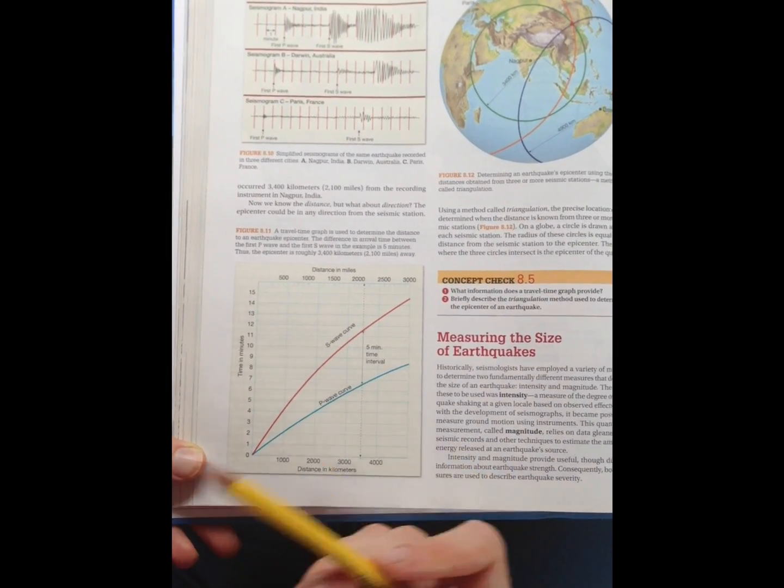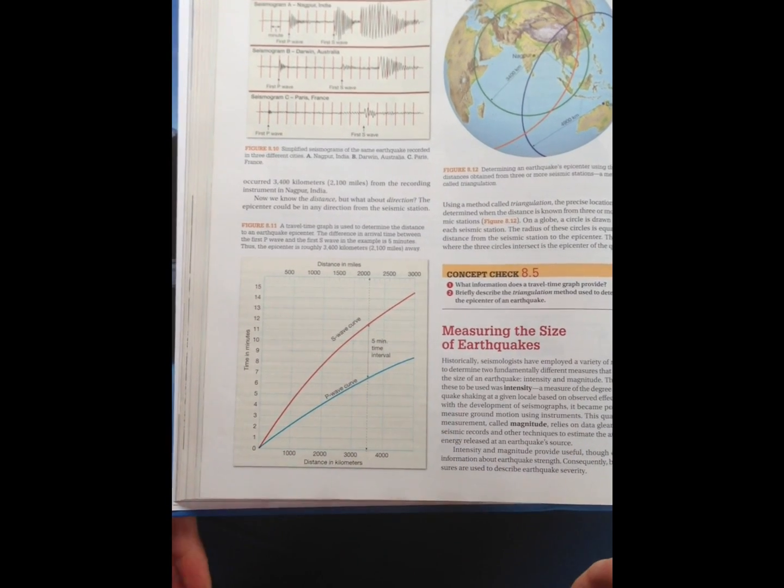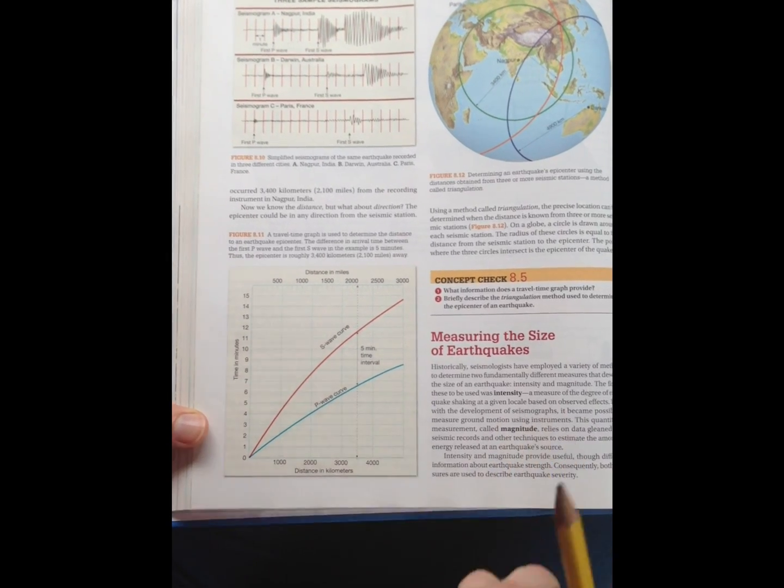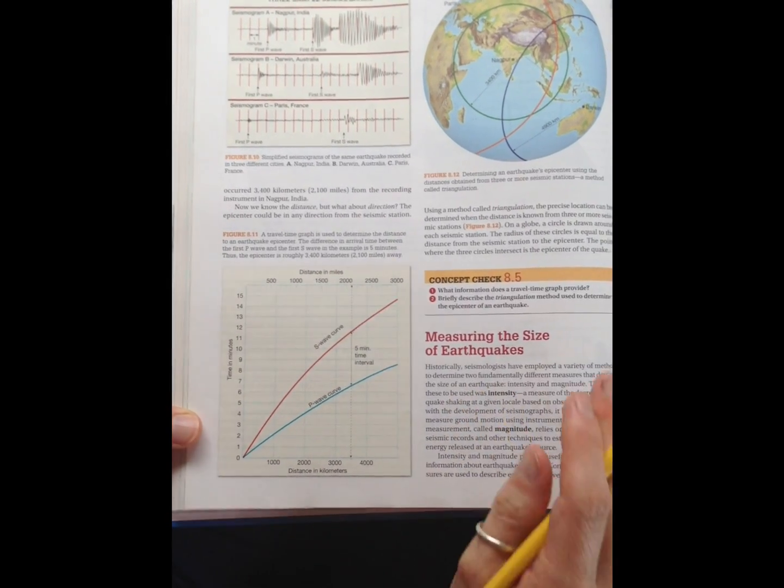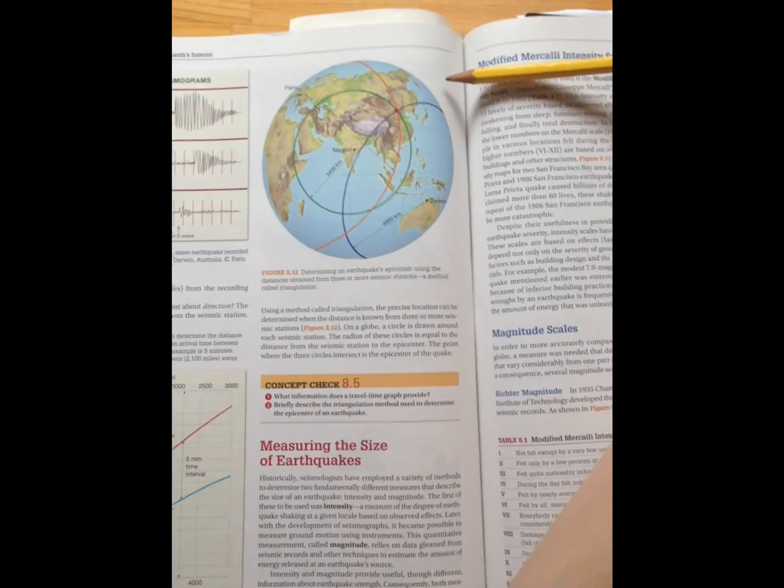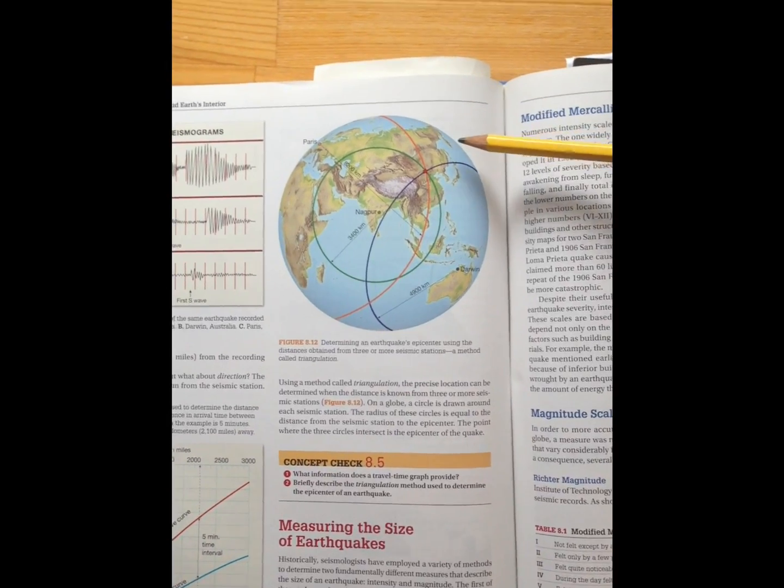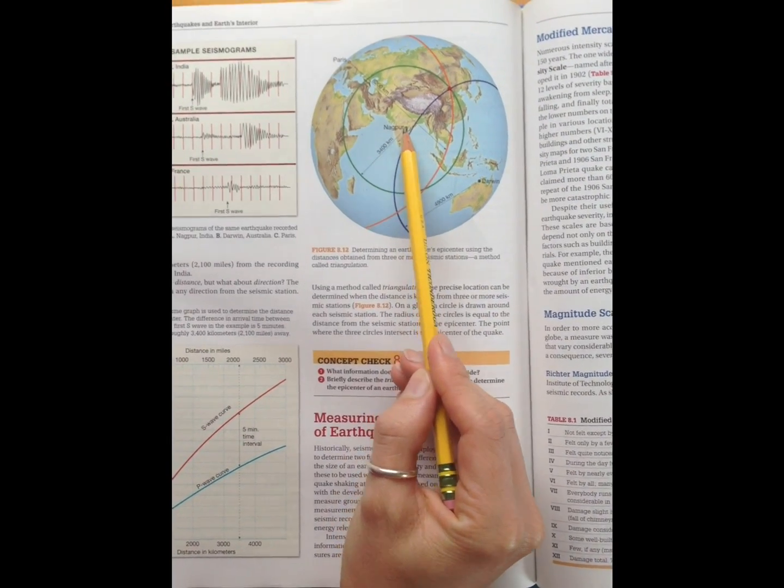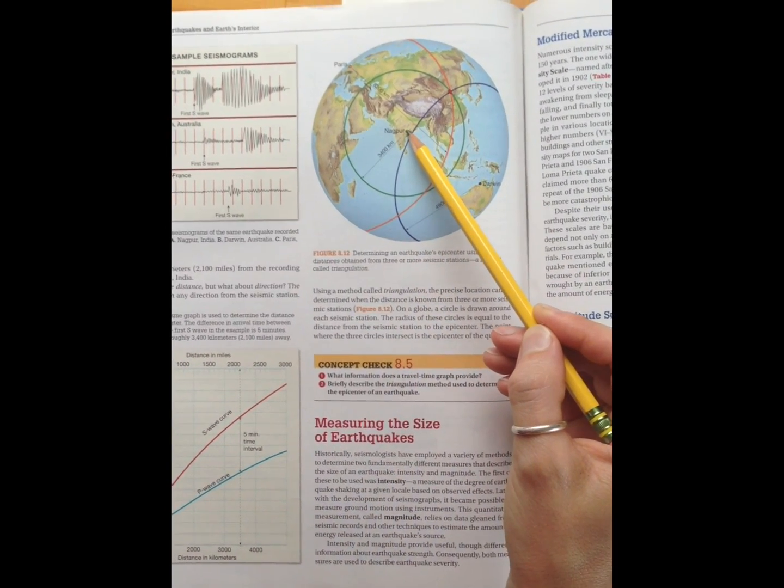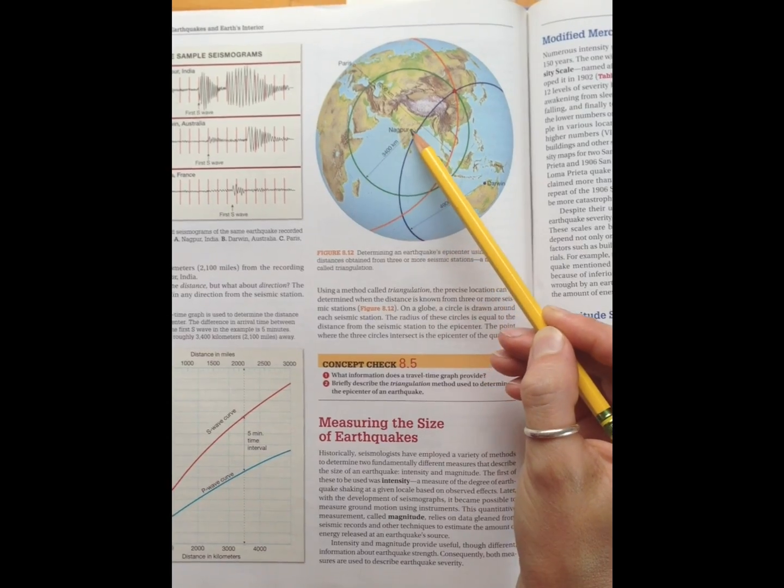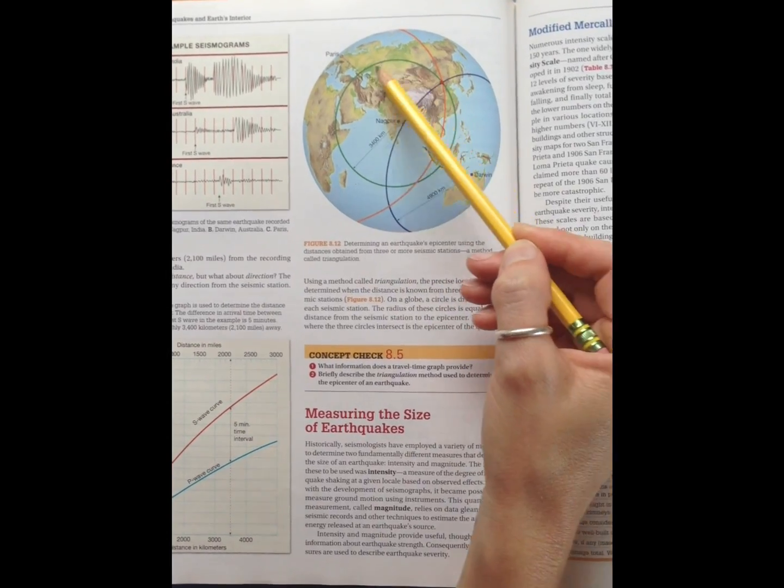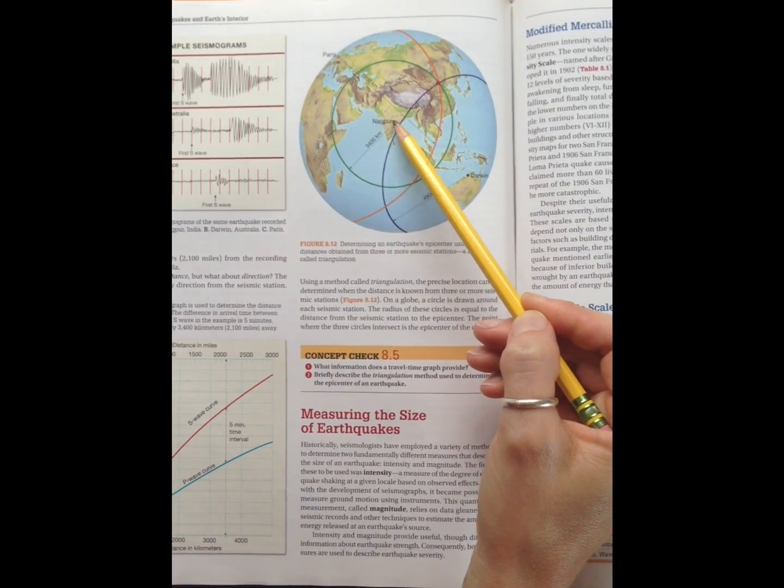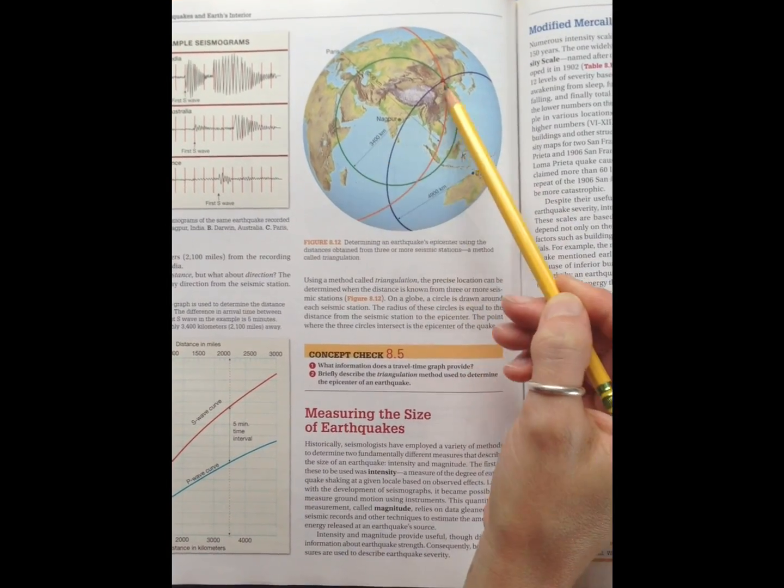So what you need to do then is you need to call up your friends in a few other locations so they can determine how far away the earthquake was from their location to then pinpoint the exact location of the epicenter. So that's what this Earth Globe image is showing you up in this upper right-hand corner of the page. So here we are at Nagpur. We determined that the epicenter of the earthquake occurred at 3400 kilometers. That's 3400 kilometers in a 360 degree circle around that location in India. So we know it was that far away, but we don't know which direction.